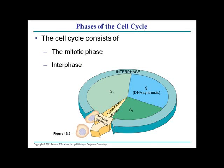Let us talk about the cell cycle. The cell cycle is a complete process of cell division. It starts at a particular point, then the cell grows, DNA is duplicated, chromosomes align and separate, and finally cytokinesis divides the cellular cytoplasm, resulting in the formation of new cells. The entire process is called the cell cycle.